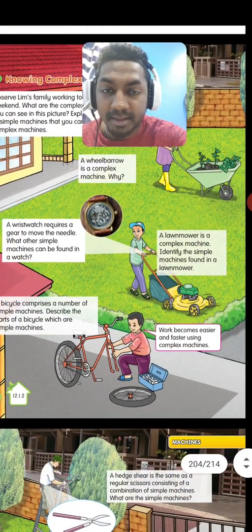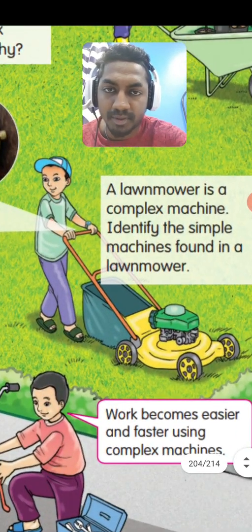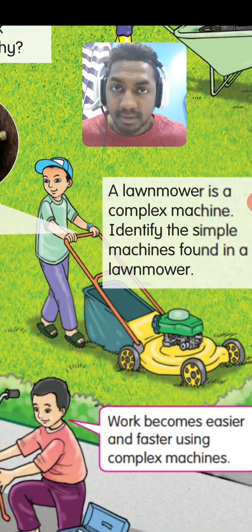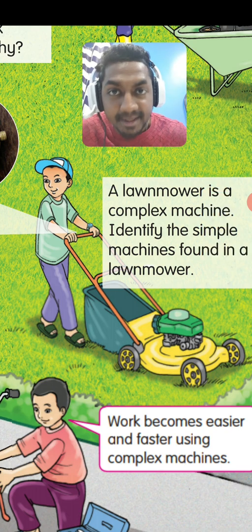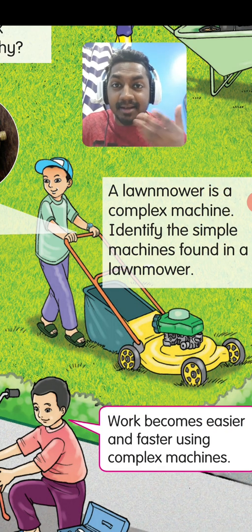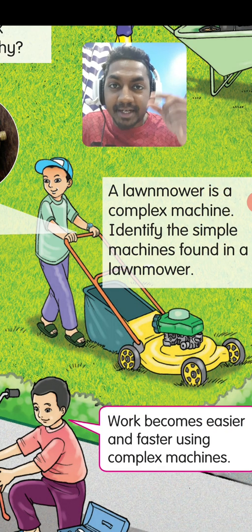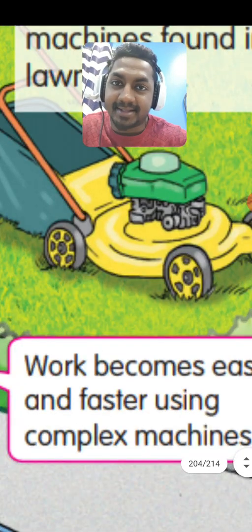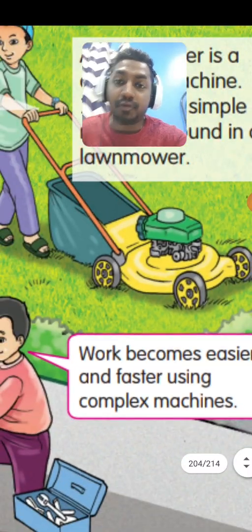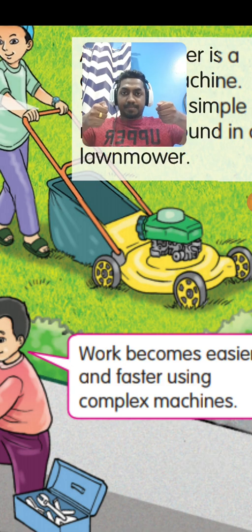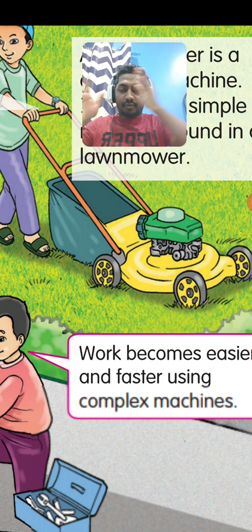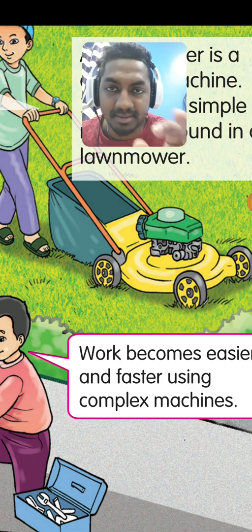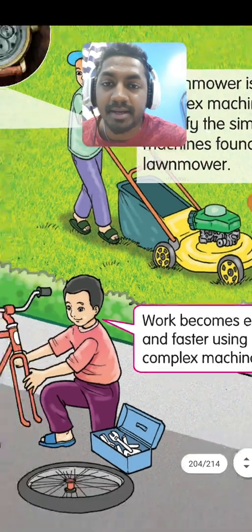Look at the lawnmower. The lawnmower contains a wheel and axle and also a wedge, because it's cutting the grass. So it contains a wedge and a wheel and axle, and also when the person is pulling or pushing it from one place to another, there is a lever as well.